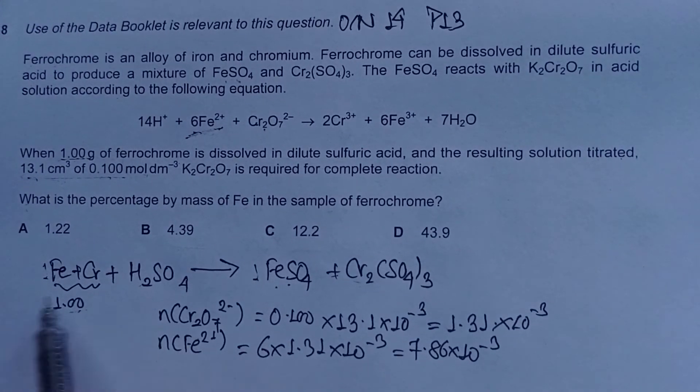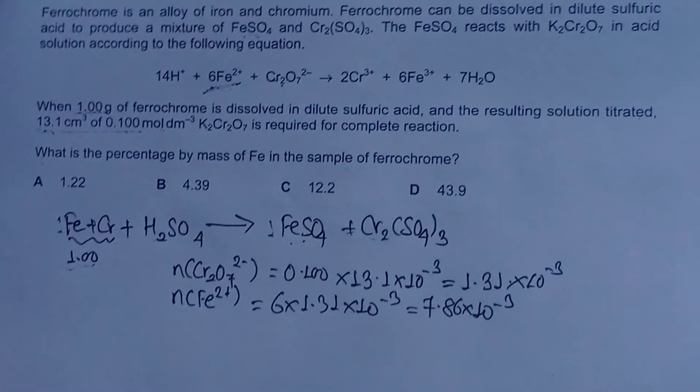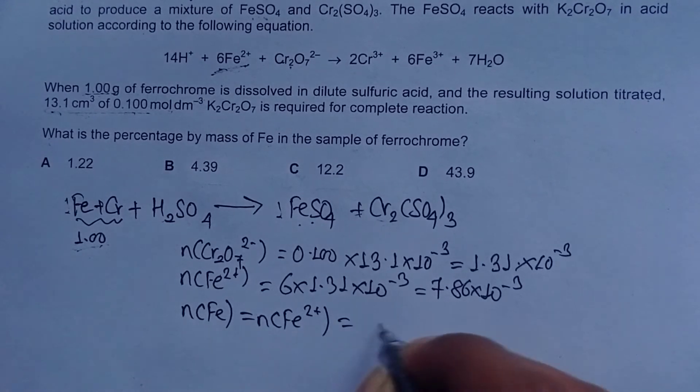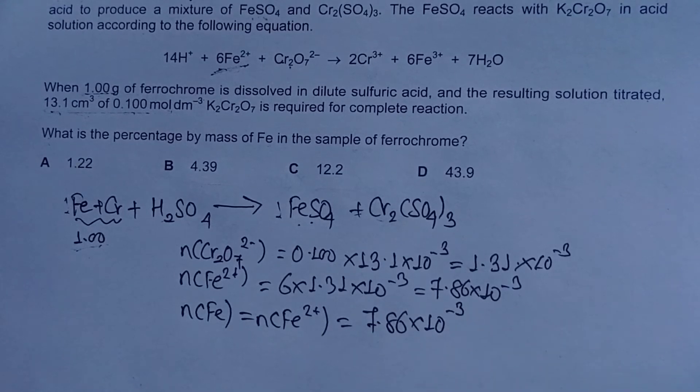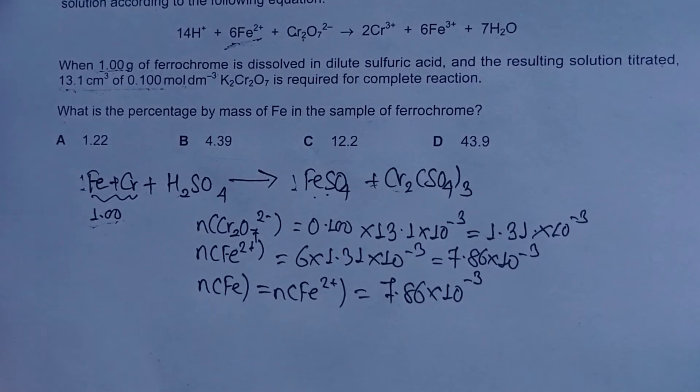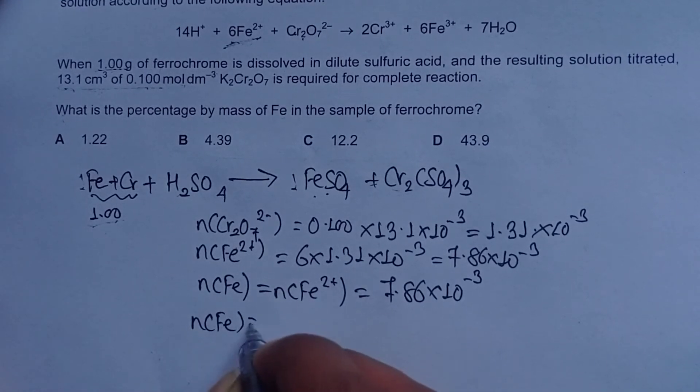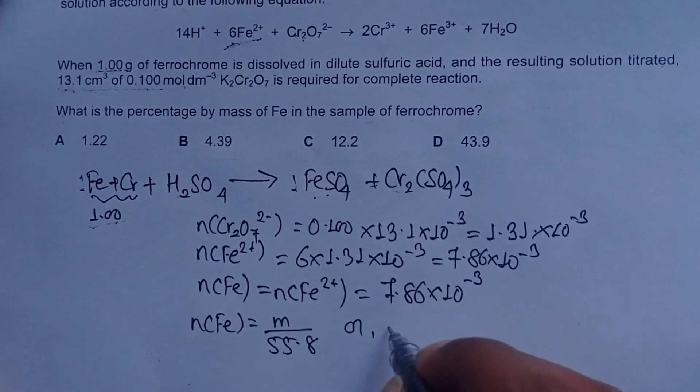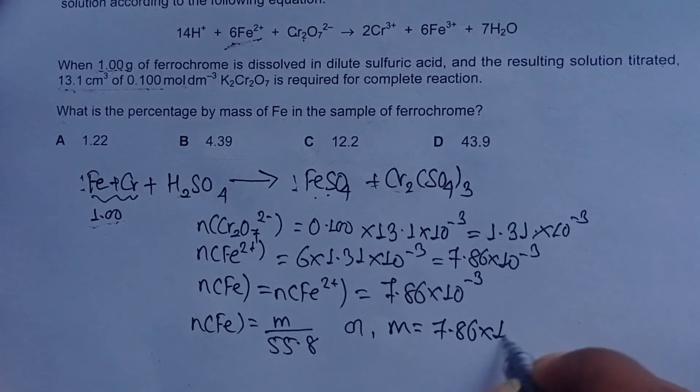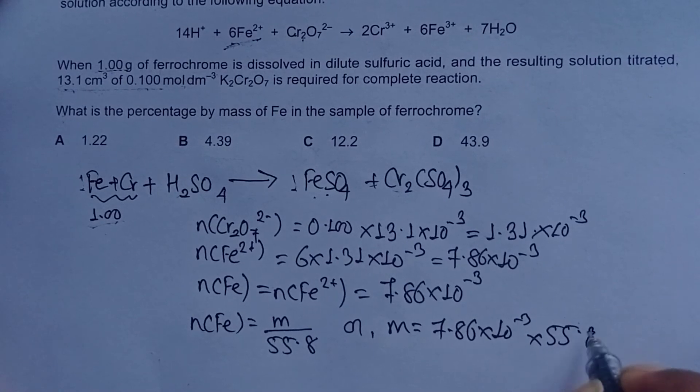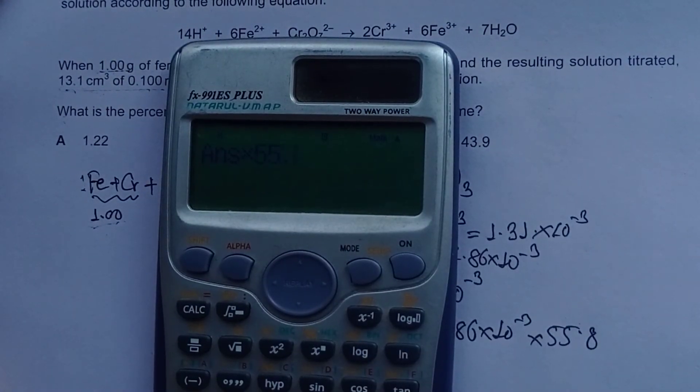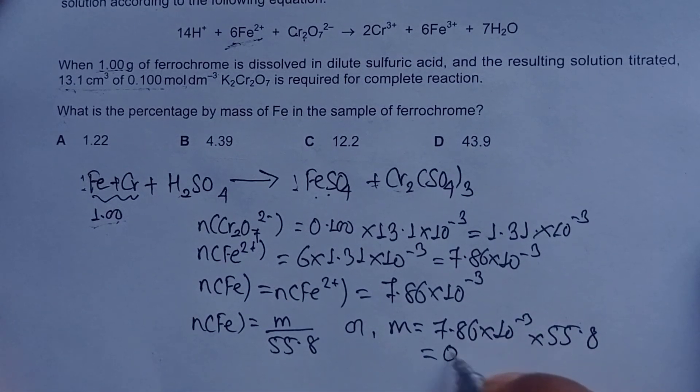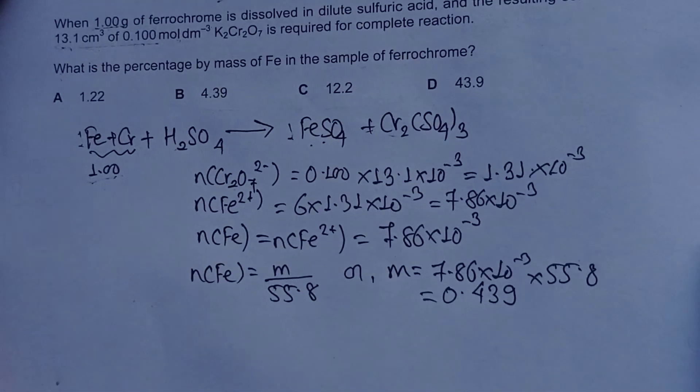From this, we know moles of iron equals moles of Fe²⁺, which is 7.86 × 10⁻³. Now we need to calculate mass of iron, which is moles times Ar. The Ar of iron is 55.8, so the mass is 7.86 × 10⁻³ × 55.8 = 0.438. Rounding to three significant figures, we get 0.439.